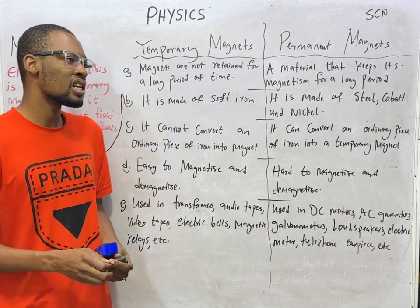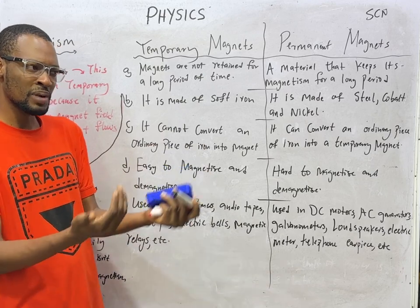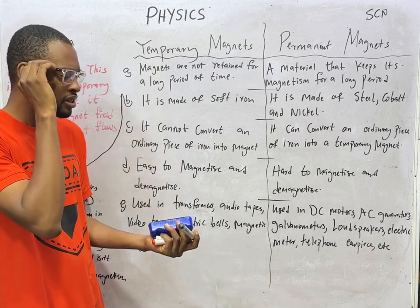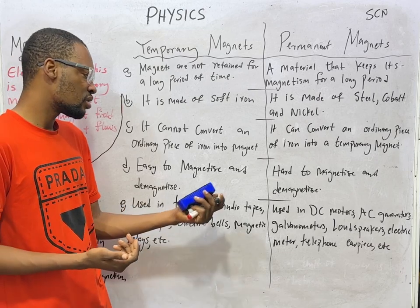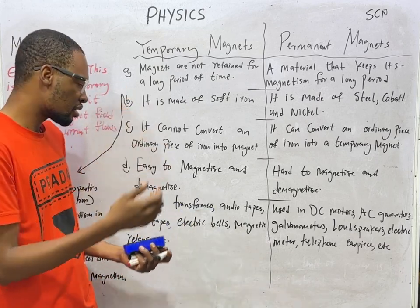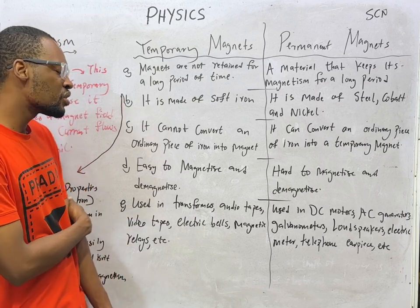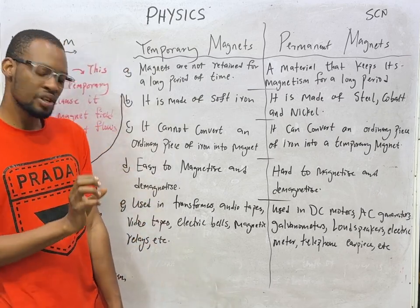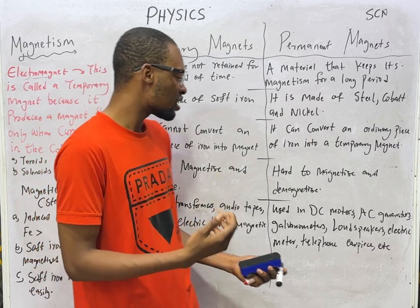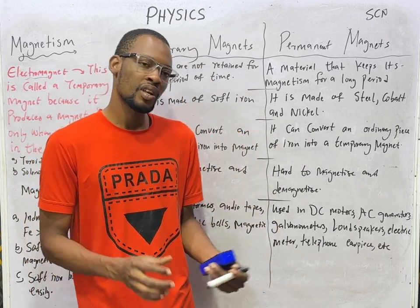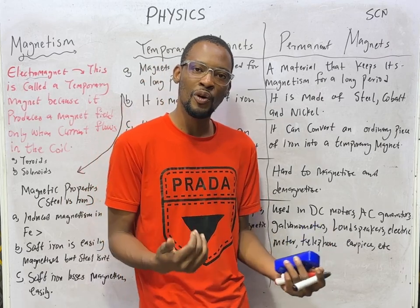Temporary magnets are used in applications where magnetic reversal is required and easy demagnetization is important. We use them in transformer cores, audio tapes, video tapes, electric bells, and magnetic relays. Meanwhile, permanent magnets find applications in DC motors, AC generators, galvanometers, loudspeakers, electric meters, and telephone earpieces, among others.